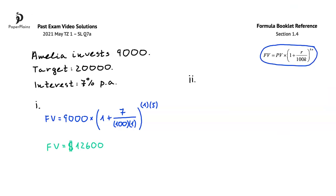In the second part of this question, we have to determine the number of years that are required for Amelia's investment to reach her target of $20,000. Well, once again, use the formula.